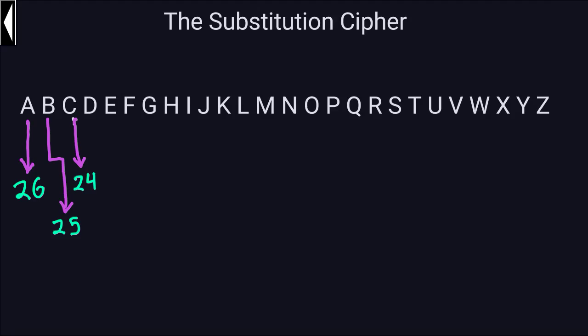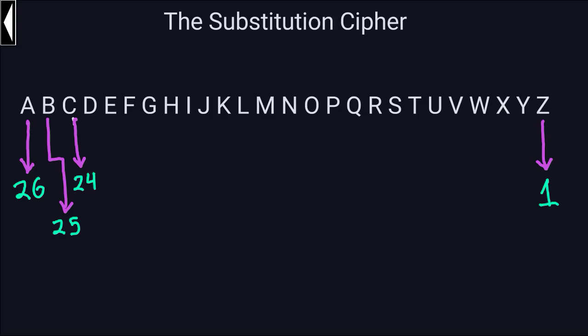You can imagine the pattern continues: 26 choices for 'a', 25 for 'b', 24 for 'c', then 'd' will have 23, 'e' will have 22, and so on. These numbers represent the possibilities for each letter. The very last letter, 'z', will have only one possibility, because I already used 25 letters and cannot repeat any of them.